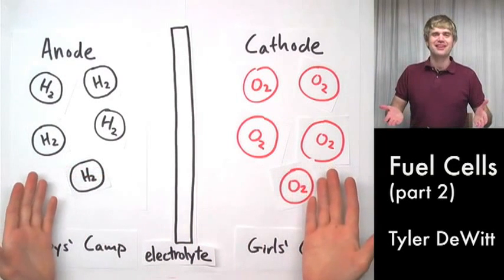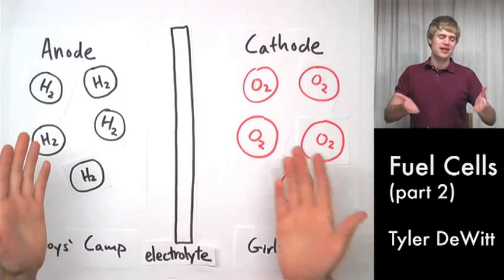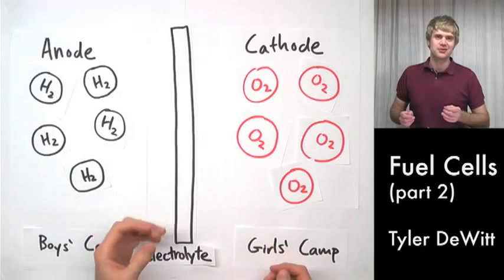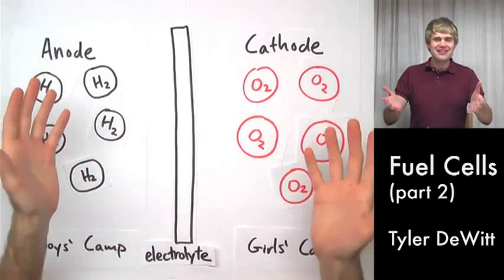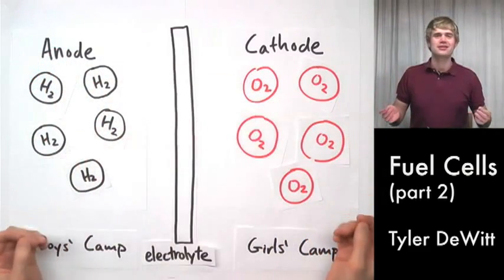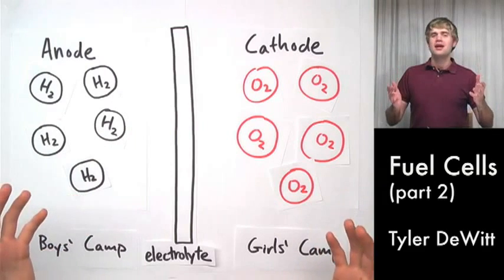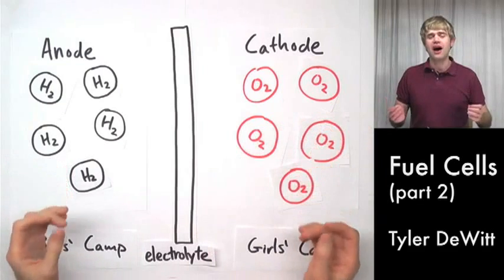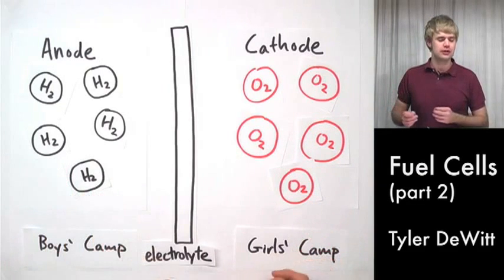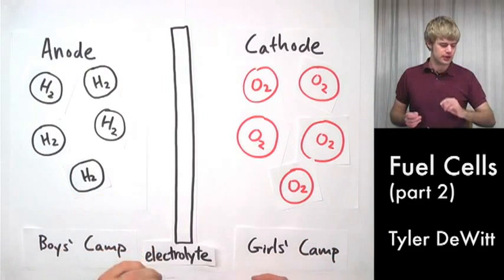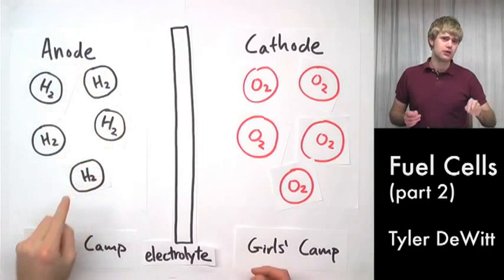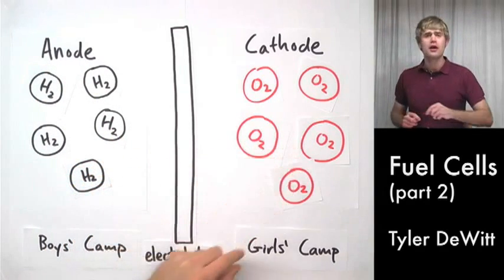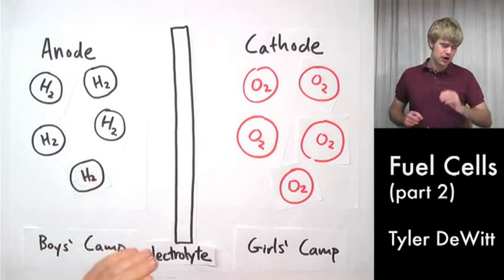So, what ends up happening here? Well, we can't underestimate our 16 year olds. I mean, they'll do whatever they need to get to the other camp. And that might mean staying out every single night after curfew or hiking for five miles through the woods so that they can secretly rendezvous. Similarly, the hydrogen molecules here have a plan for how they're going to get past the barrier into the girls camp. Here's how it works.